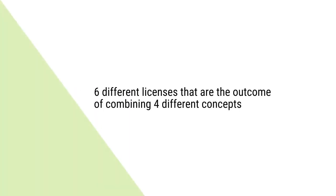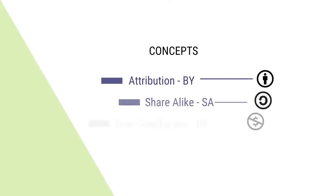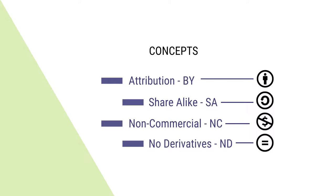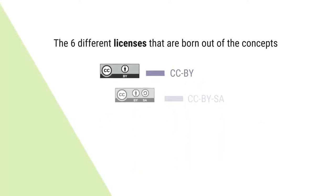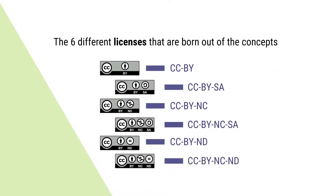There are 6 different combinations of CC licenses that are the outcome of combining 4 different concepts. The concepts are Attribution (BY), Share Alike (SA), Non-Commercial (NC), and Non-Derivative (ND). The 6 different licenses that are borne out of these combinations are CC BY, CC BY SA, CC BY NC, CC BY NC SA, CC BY ND, and CC BY NC ND.